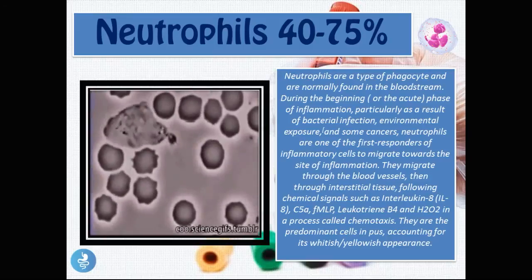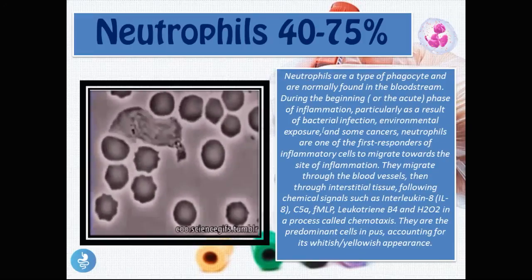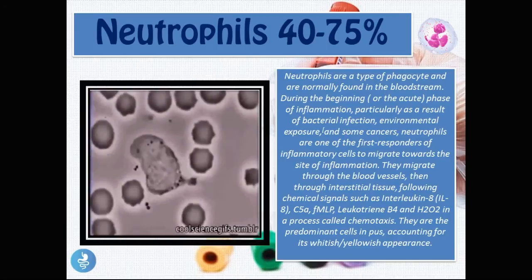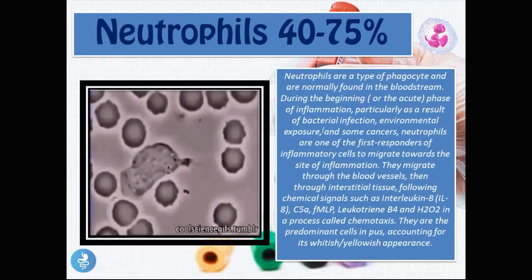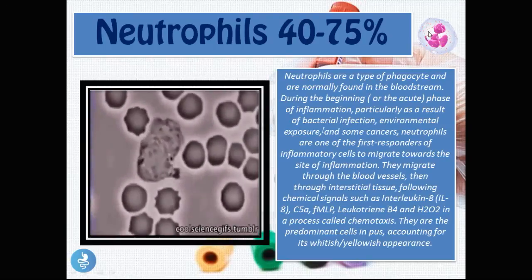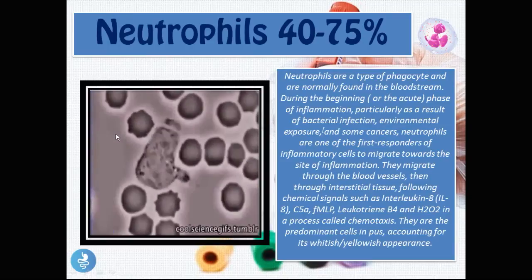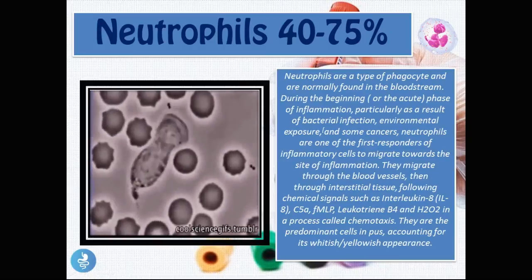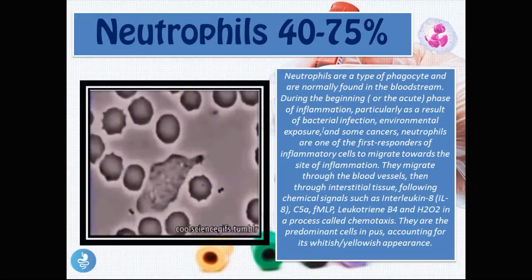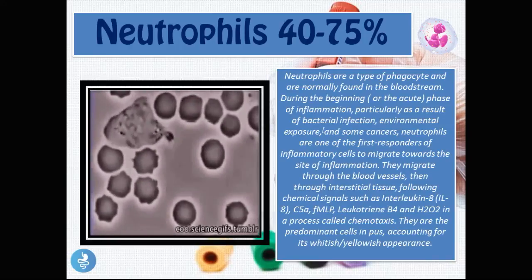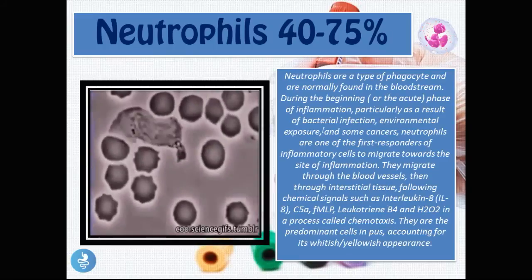Now we discuss white blood cells. There are five types: neutrophils, lymphocytes, eosinophils, monocytes, and basophils. Neutrophils normally make up 40 to 75 percent of all white blood cells. As seen in the diagram, neutrophils are chasing and ingesting bacteria. They are a type of phagocyte — a cell that eats and destroys — normally found in the bloodstream during the acute phase of inflammation, particularly from bacterial infection, environmental exposure, and some cancers.